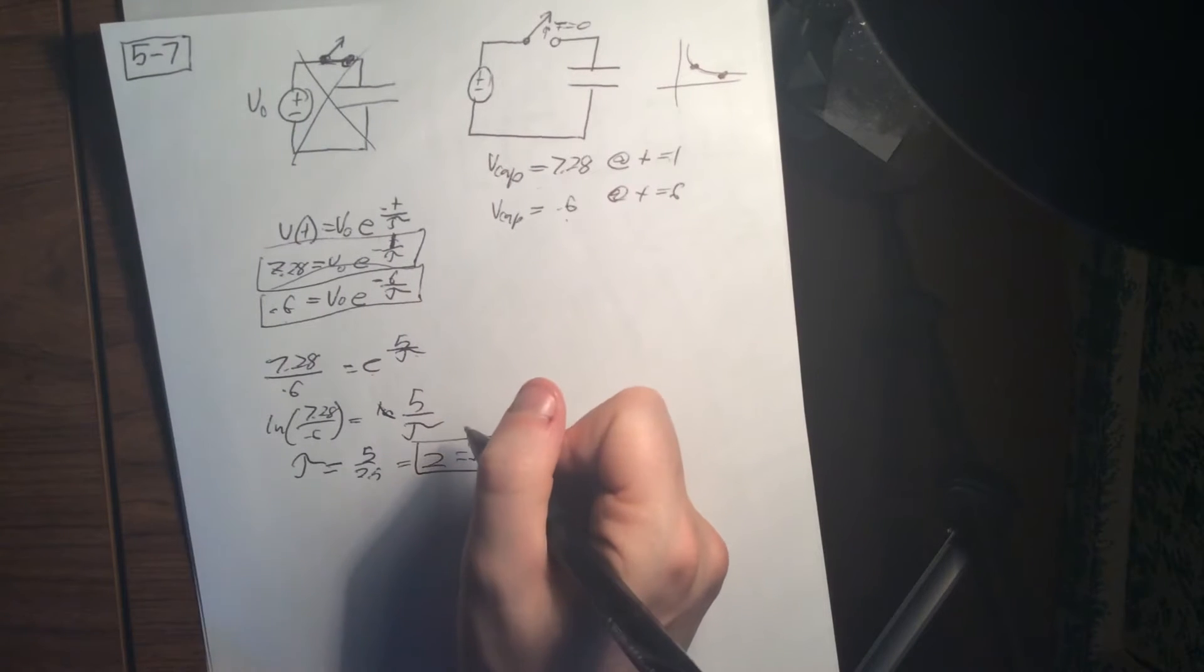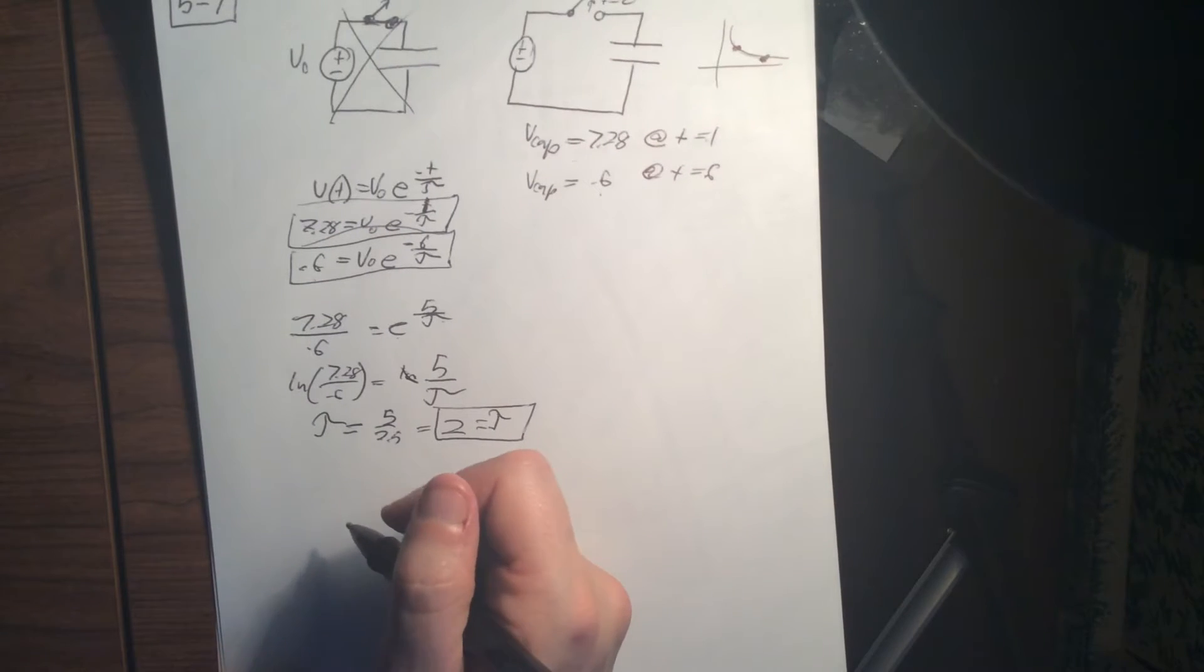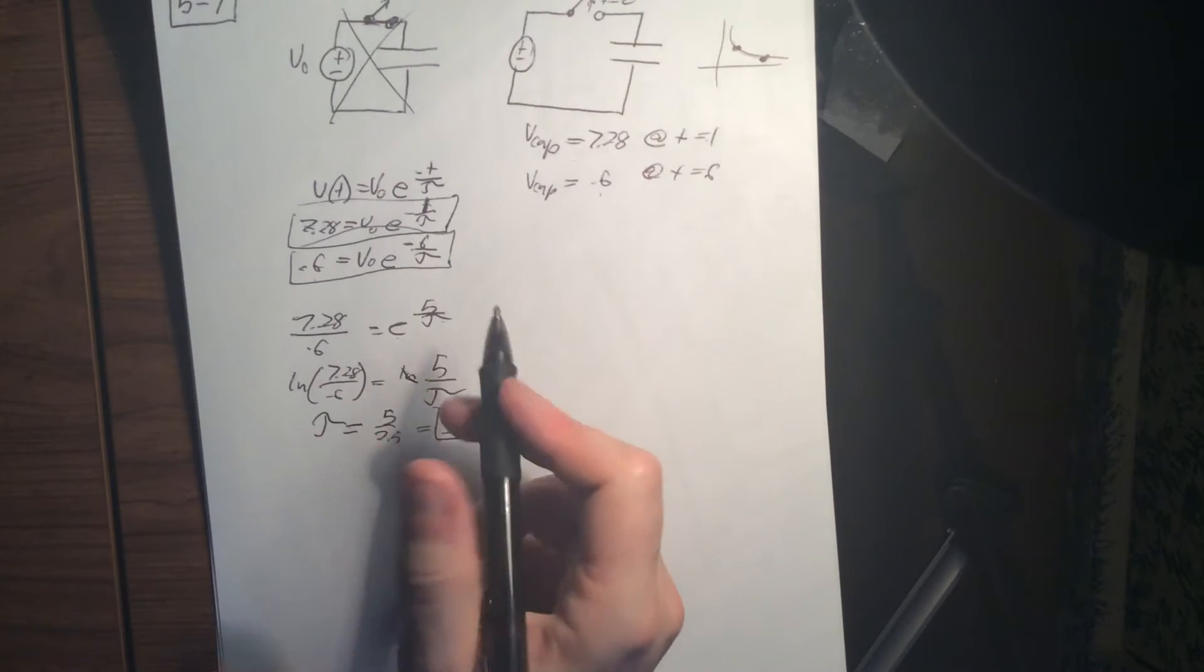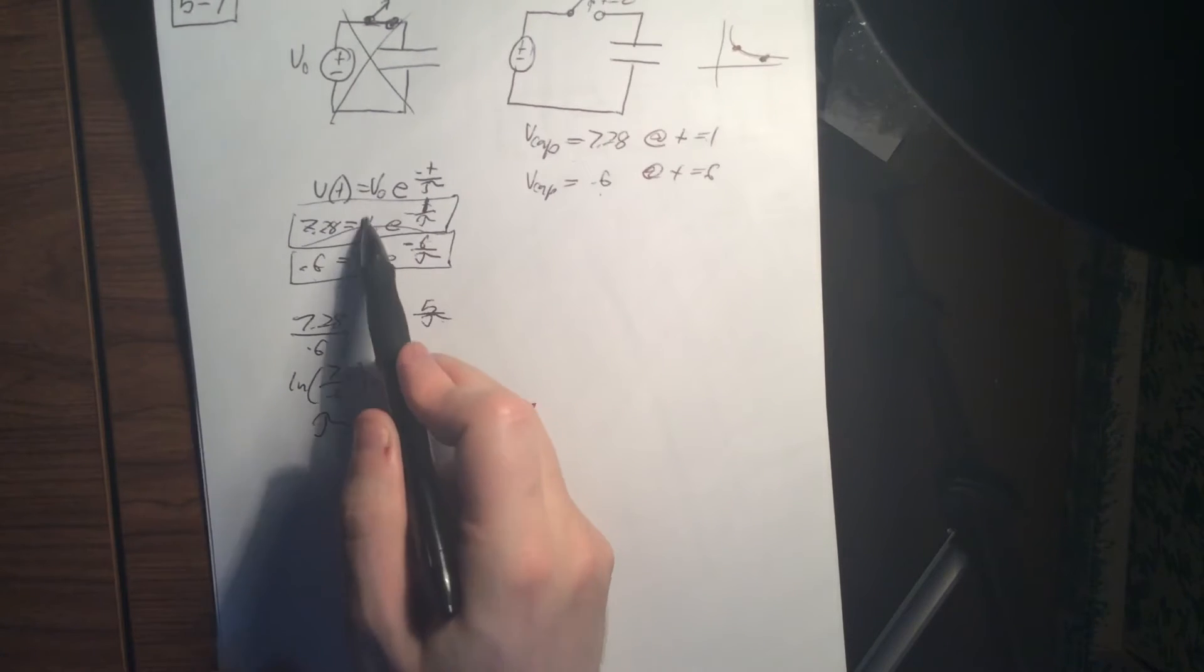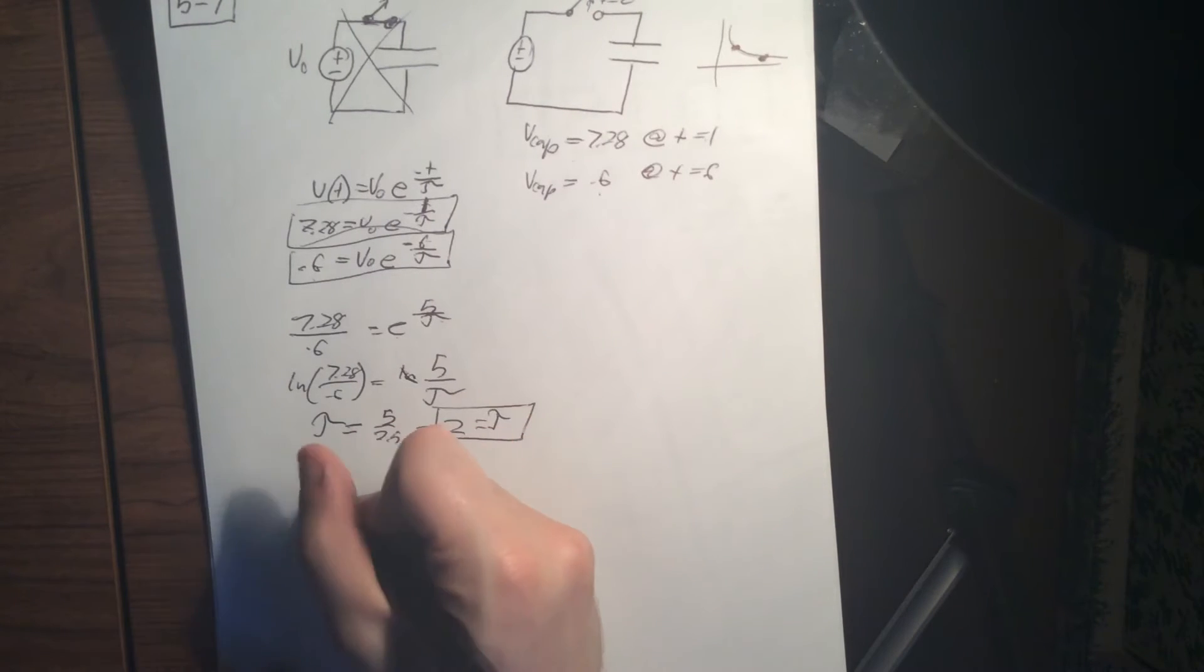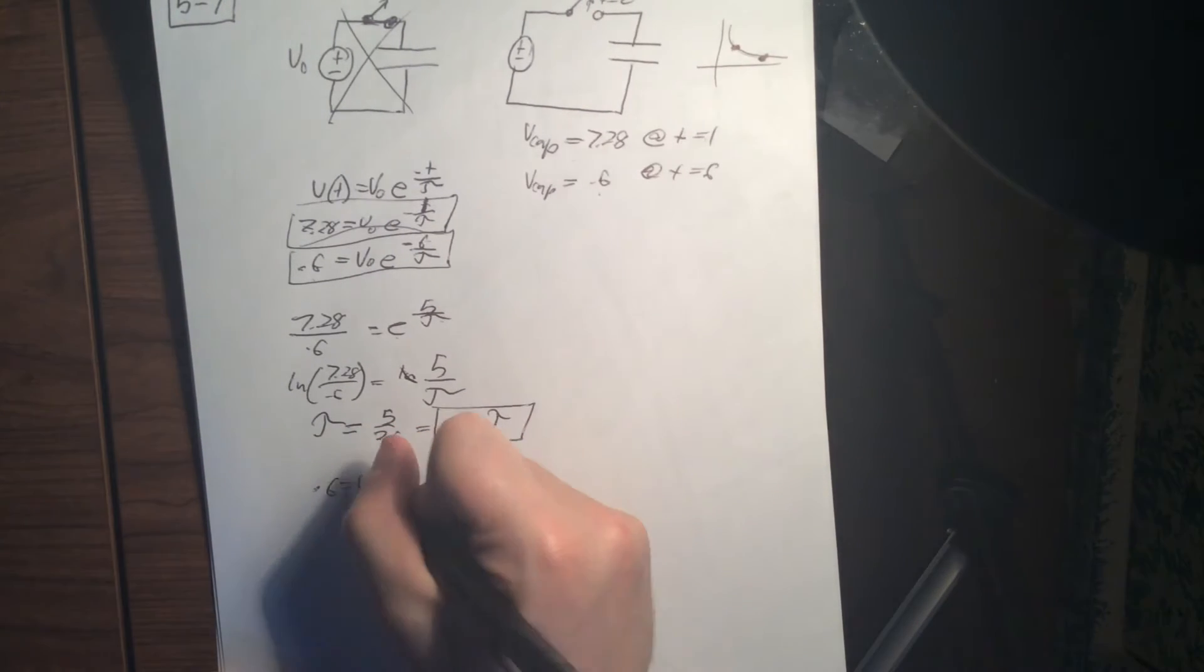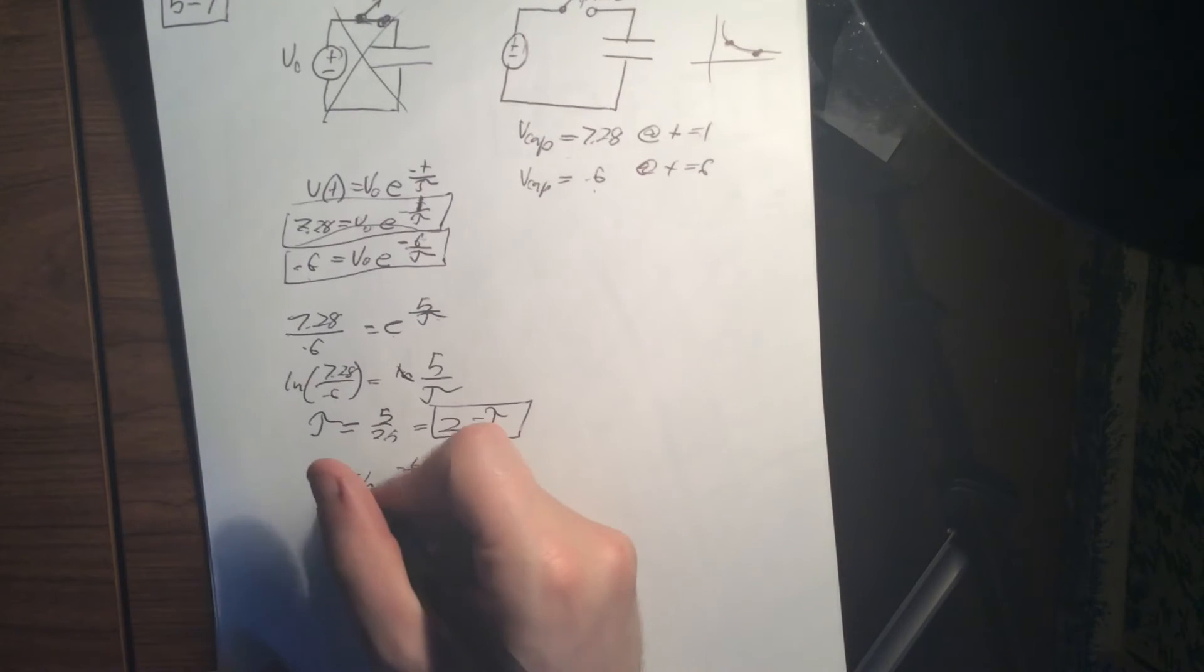Cool. And then we're also going to get for this one, we can plug back in to solve for our V0. Because essentially V0 is the same in both of these, so it canceled out, which is nice how we could solve this. So now we've got to find back for our V0. So just take the second one. 0.6 equals V0 times e to the minus 6 divided by 2. And it's going to be 0.6, then 12 times V0 equals 12. V0 equals 12 volts.